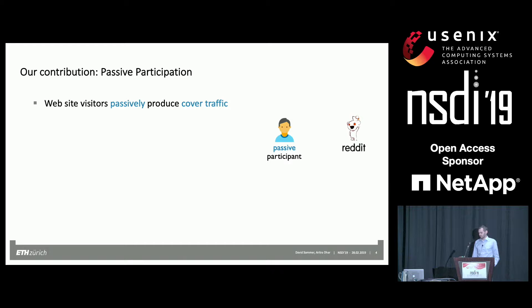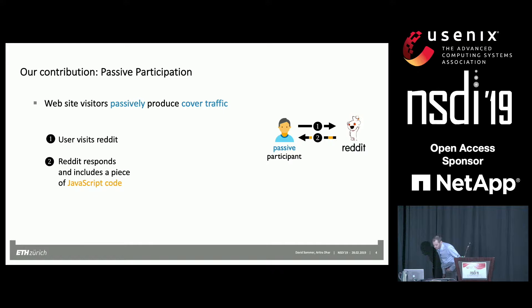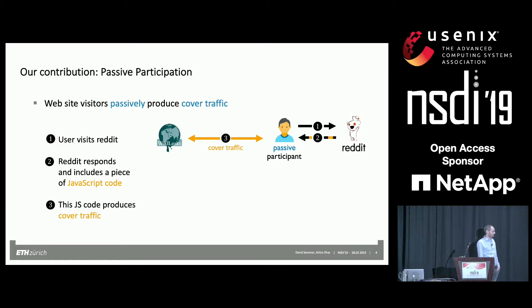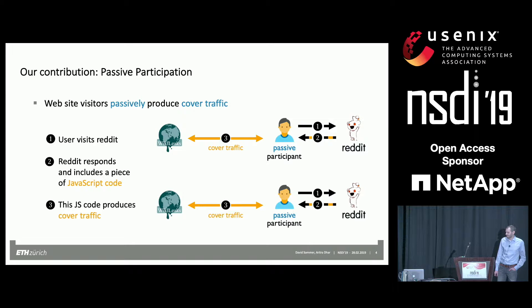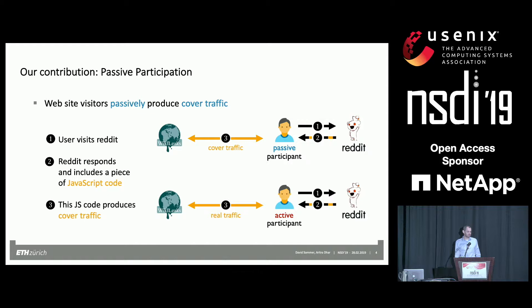As a user, say you want to go to Reddit to read some subreddit content. You visit Reddit, Reddit gives you a small piece of JavaScript code, and this JavaScript code allows you to create connections to other predefined websites, for example WikiLeaks. Now think about another person who also visits Reddit but does so specifically to receive data from WikiLeaks — he is not really interested in reading subreddit content. We call this person an active participant.